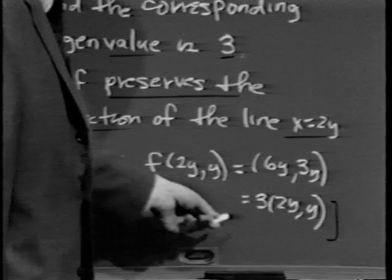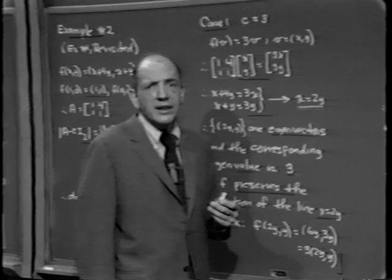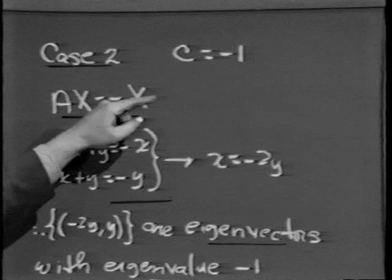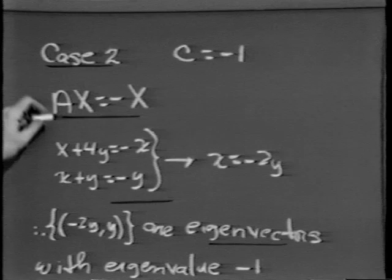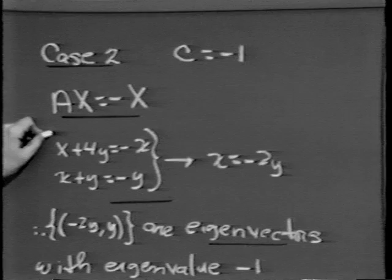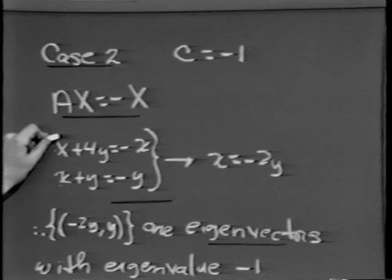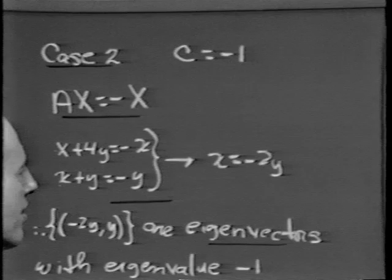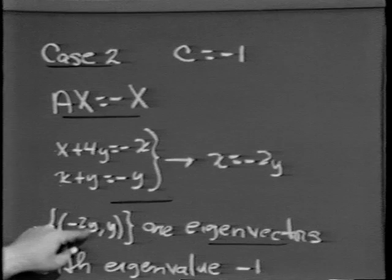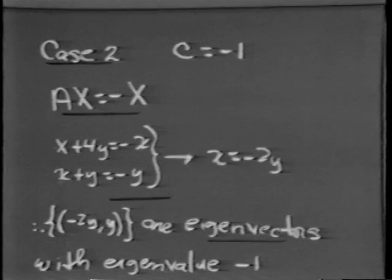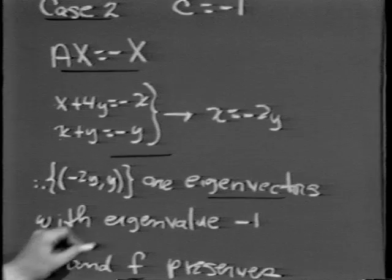Similarly, c = −1 is the other characteristic value. If c = −1, the equation f(v) = cv becomes f(v) = −v, or in matrix language Ax = −x. Working out the components, both equations say x = −2y. So the set of all two-tuples of the form (−2y, y) are eigenvectors, the corresponding eigenvalue is −1, and f preserves the direction of the line x = −2y.